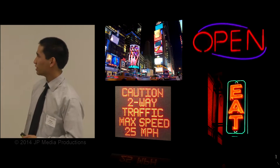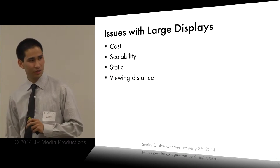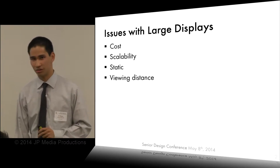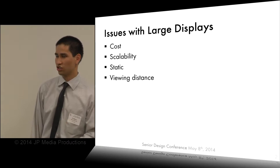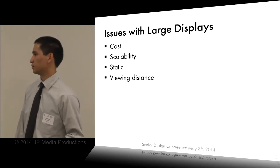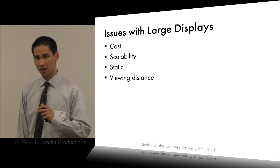However, all these have issues. The cost of these displays is pretty expensive — they can range from thousands to even millions of dollars per installation. For example, the giant Jumbotron in AT&T Stadium is around two million dollars for installation. They also lack scalability, so if you want to scale or upgrade your display it costs quite a bit of money. This is also related to viewing distance: if you want a larger viewing distance you have to make the display bigger, which adds to cost.